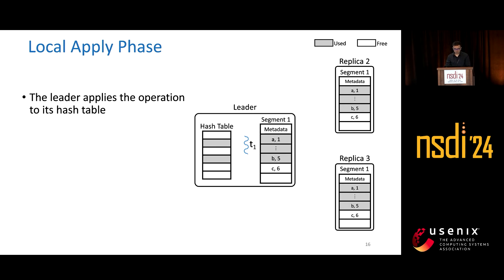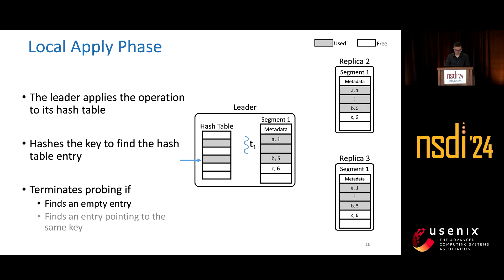Here, we need to add a pointer to this newly inserted segment store entry to the hash table. We first hash the entry to find the correct key. Let's say this is the spot where we're supposed to insert it into the table, but it's already used. So we begin linear probing, and we terminate probing with the first empty entry or an entry pointing to the same key that we find. In this case, we find an empty spot and insert a pointer to the new entry.